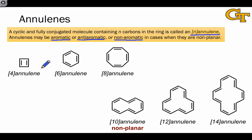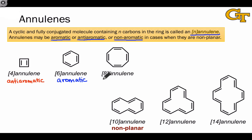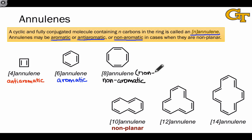We can think of cyclobutadiene, benzene, and cyclooctatetraene — three molecules we've discussed previously — as annulenes in their own right. Cyclobutadiene is anti-aromatic due to its 4 pi electrons, benzene is aromatic, while cyclooctatetraene is best described as non-aromatic, because although it would be anti-aromatic if fully planar, in actual fact the molecule is non-planar.